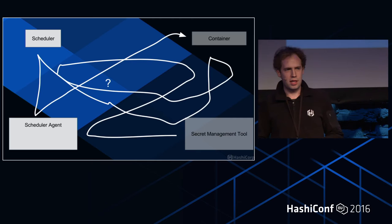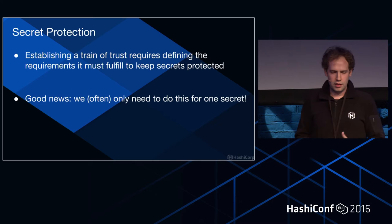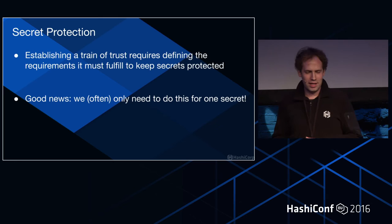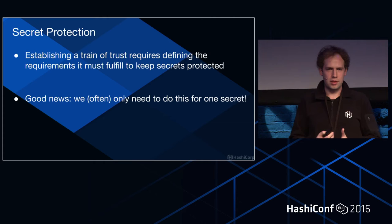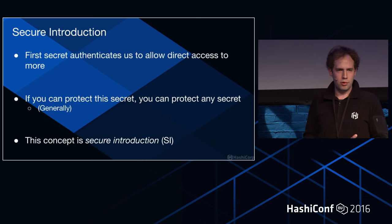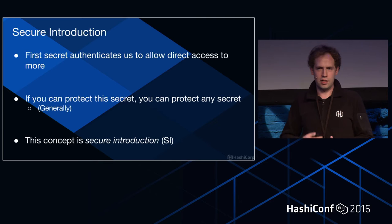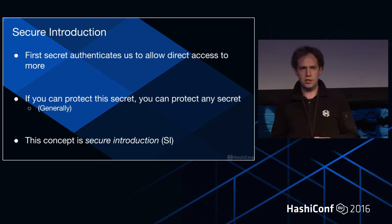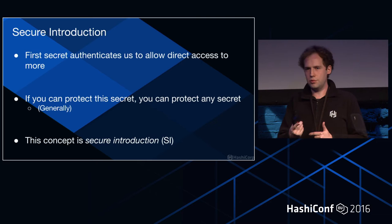To do this, we need to understand secret protection. When you establish a chain of trust, it requires defining the requirements that must be fulfilled to keep secrets protected. The good news is we often need to do this for only one secret — sometimes that's because we only need a database password. But often it's because the first secret just authenticates us to get more. If the first secret is a token for Vault, you can use that to get other things according to your security policy.